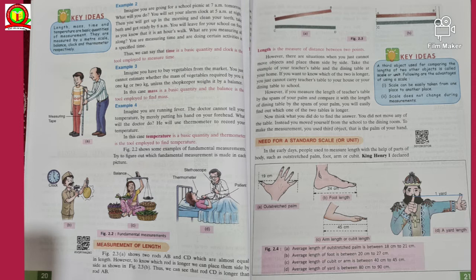Measurement of length: Figure 2.3 shows two rods AB and CD which are almost equal in length. However, to know which rod is longer, we can place them side by side as shown in Figure 2.3.